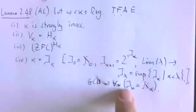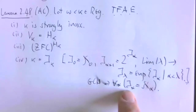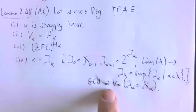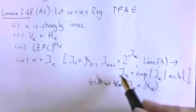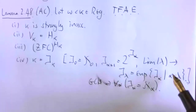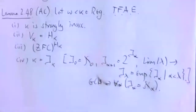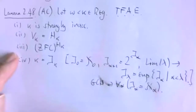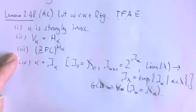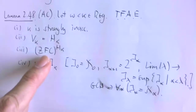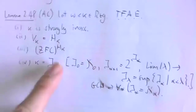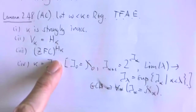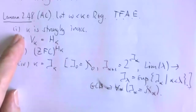So being strongly inaccessible means you are a regular fixed point of the beth function. The beth function is picking out a closed unbounded class of cardinals — its range forms a closed unbounded class, so the beth function is a normal function, with continuity at limit stages. Clause (3) is an important one: we've got all the axioms of ZFC holding in H_kappa if kappa is strongly inaccessible. That tells us straight off we can't prove in ZFC that there exists such a kappa.